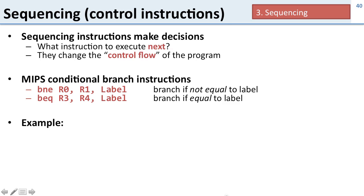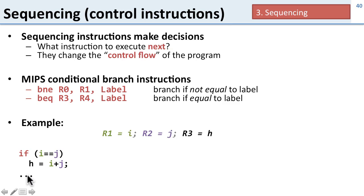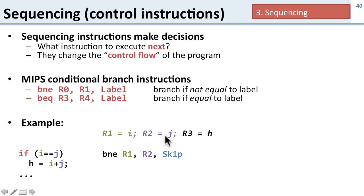Let's look at an example. I want to implement: if i equals j, then h equals i plus j; otherwise do something else. I'll put my data in registers: R1 is i, R2 is j, and R3 is h. Now I'll write the MIPS code. I do branch not equal R1 R2 skip. This says if R1 (i) and R2 (j) are not equal, I jump to skip.